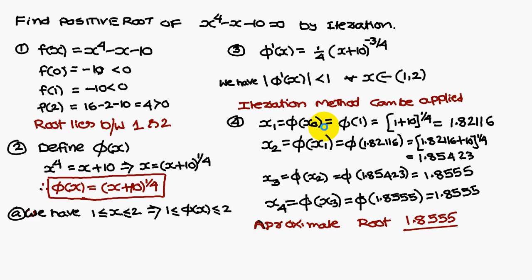Here, x1 is equal to phi of x0. So in place of x0, you can take any value where the root lies between 1 and 2. Therefore, you can have 1.5 — you can take 1.5 in place of x0 and proceed.